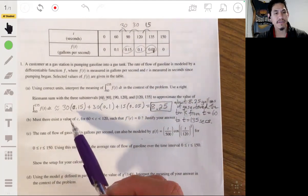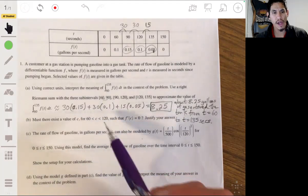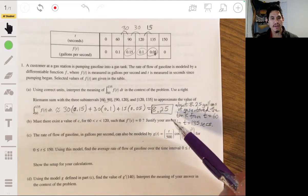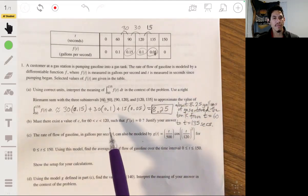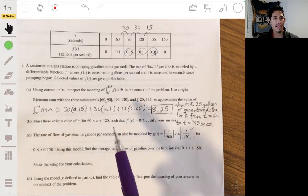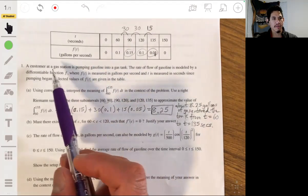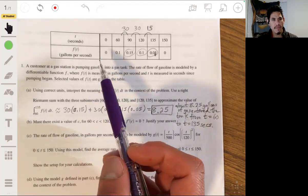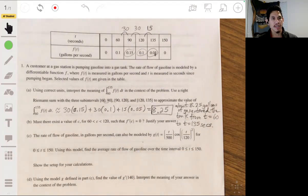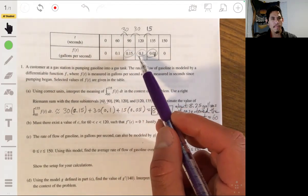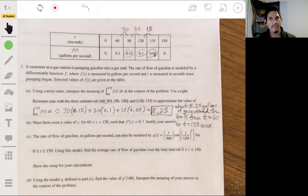Part b. Must there exist a value c for c between 60 and 120, such that f'(c) is 0? Justify your answer. So this is going to involve the mean value theorem. And the reason here is to recognize that since we're told that this is differentiable, that means it's going to be continuous on this interval. And if it's continuous, that means that if you have the end points of the interval equal to one another, then at some value, if not multiple values, at least some value between them, the slope has to be zero.